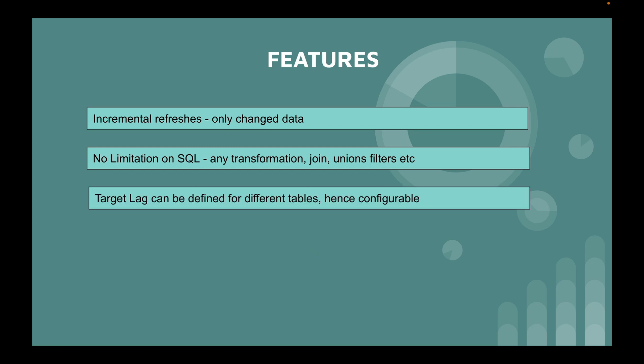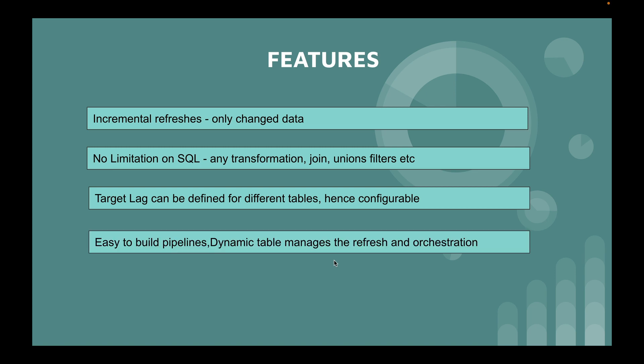TARGET_LAG is configurable per table, so in a pipeline with multiple dynamic tables, each table can have a different TARGET_LAG parameter. Dynamic tables also internally manage refresh orchestration — if a downstream dynamic table needs to refresh more quickly, Snowflake automatically manages the refresh of the upstream tables in the pipeline.